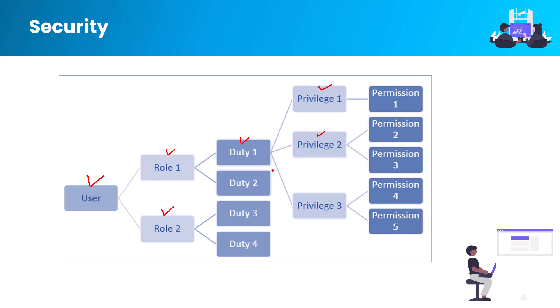If a user is assigned to a particular role, they will get several types of privileges, and those privileges contain the specific permissions. That is why a user assigned to a security role has access to the set of privileges associated with that role.